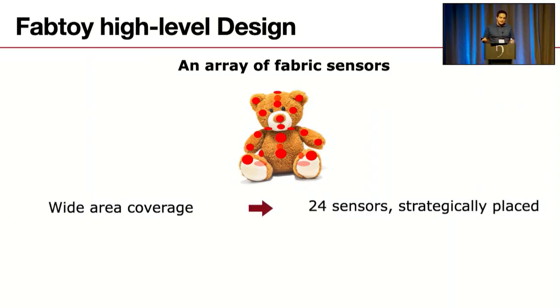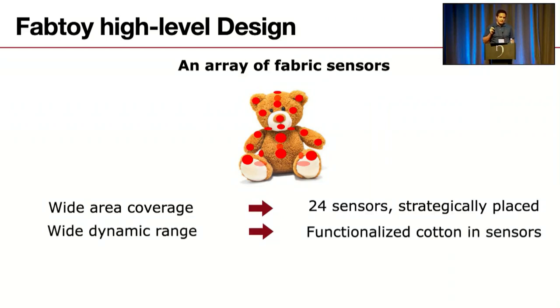To have a wide area of coverage, we added 24 sensors underneath the felt, placed strategically around the toy. We needed wide dynamic range to detect very tiny weak signals as well as very strong grasping of the toy.